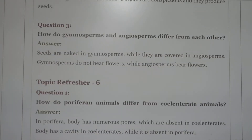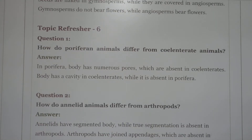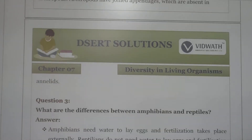Next question: how do porifera animals differ from coelenterates? In porifera, the body has membranous pores which are absent in coelenterates. The body of coelenterates has a canal system while it is absent in porifera. How do annelids differ from arthropods? Annelids have a segmented body while true coelom is absent in arthropods. Arthropods have jointed appendages which are absent in annelids.